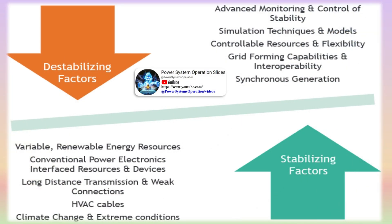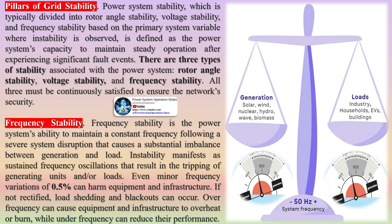As the proportion of renewable energy in our energy portfolio expands, the complexity of guaranteeing dependability also increases. Power system stability — typically divided into rotor angle stability, voltage stability, and frequency stability based on the primary system variable where instability is observed — is defined as the power system's capacity to maintain steady operation after experiencing significant fault events. All three types must be continuously satisfied to ensure the network's security.